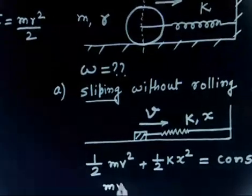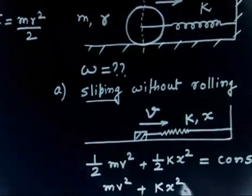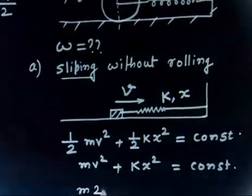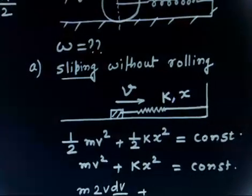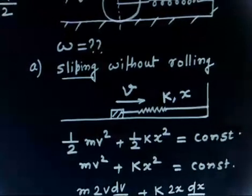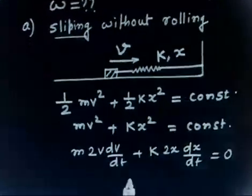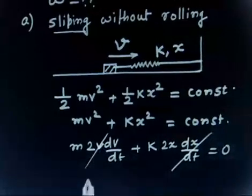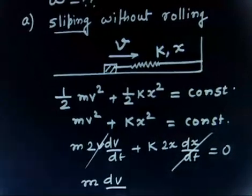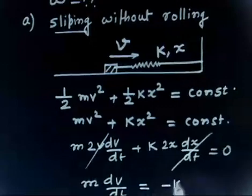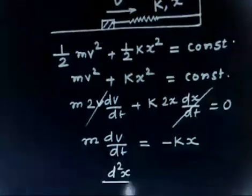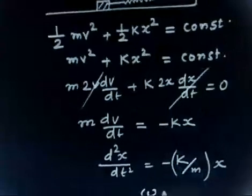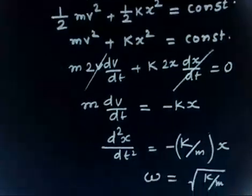So MV² + KX² equals constant. Differentiating: M·2V·(dV/dt) + 2X·(dX/dt) = 0. Since dX/dt = V, we can cancel V, giving M·(dV/dt) = −KX. So d²X/dt² = −(K/M)·X, meaning ω₁ = √(K/M). There is nothing new in this case, so we can go fast.